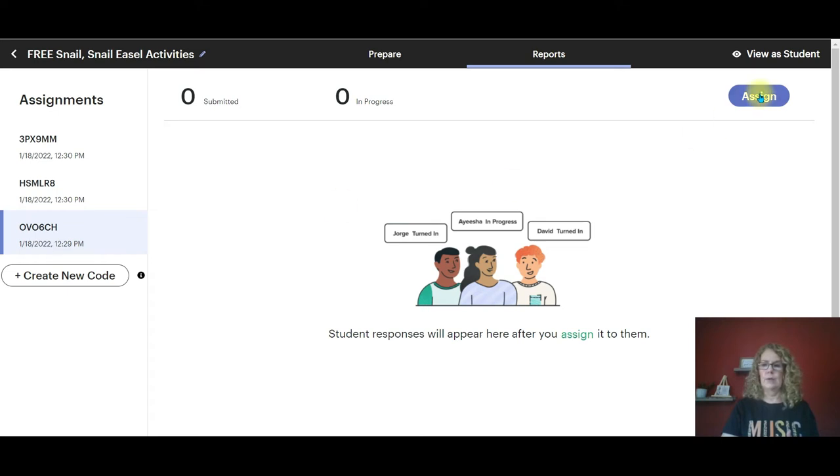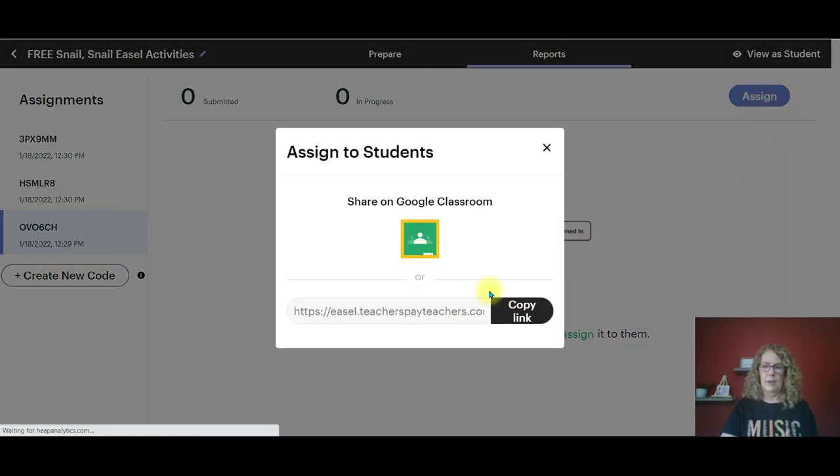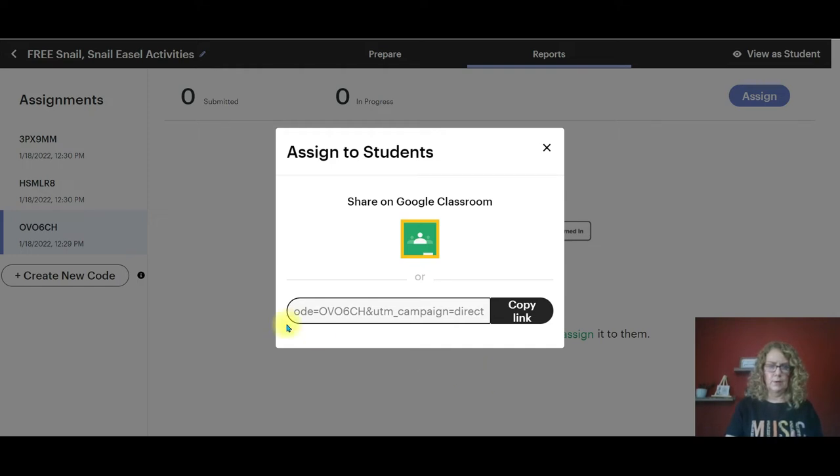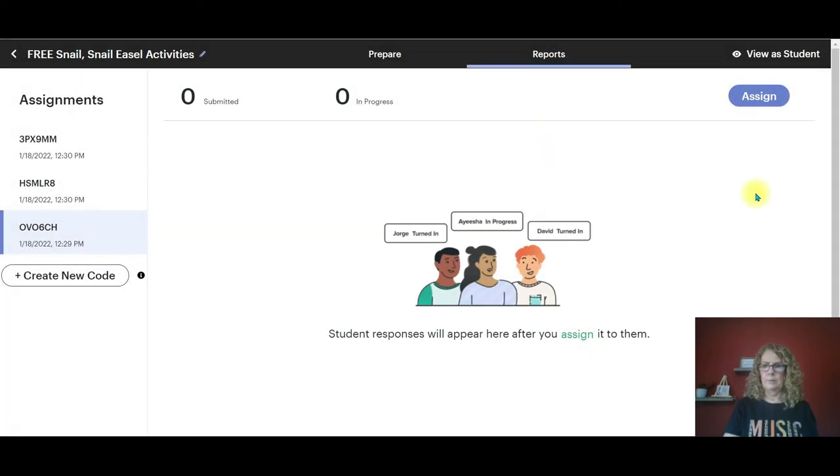We're going to click that code, hit assign, and look at your code. Right here you see that code is embedded in the link so you're sure that you have the correct one. So that's how you assign. Pretty simple.